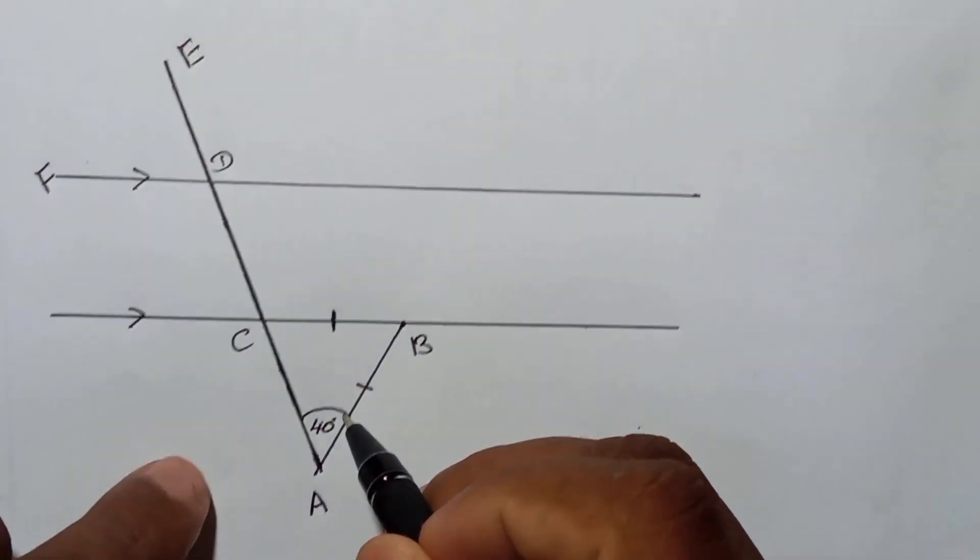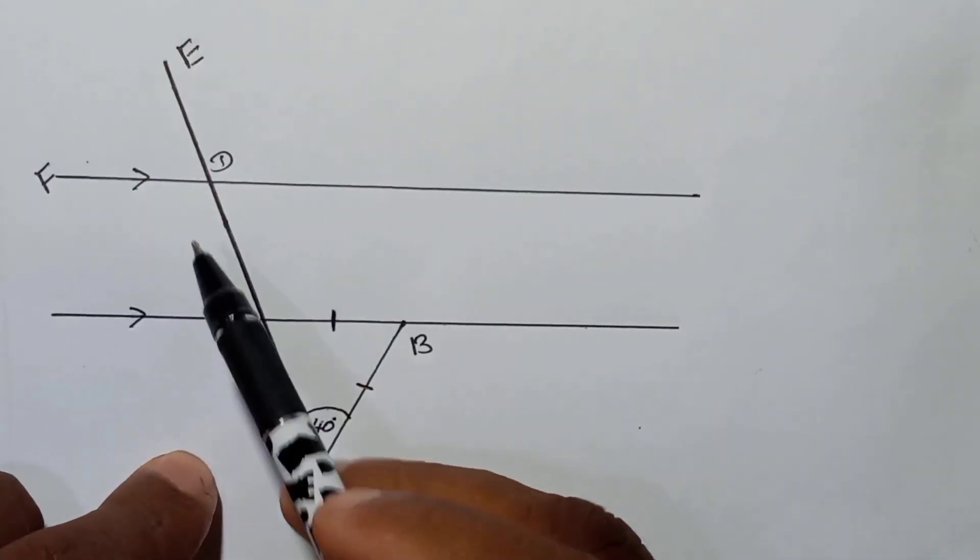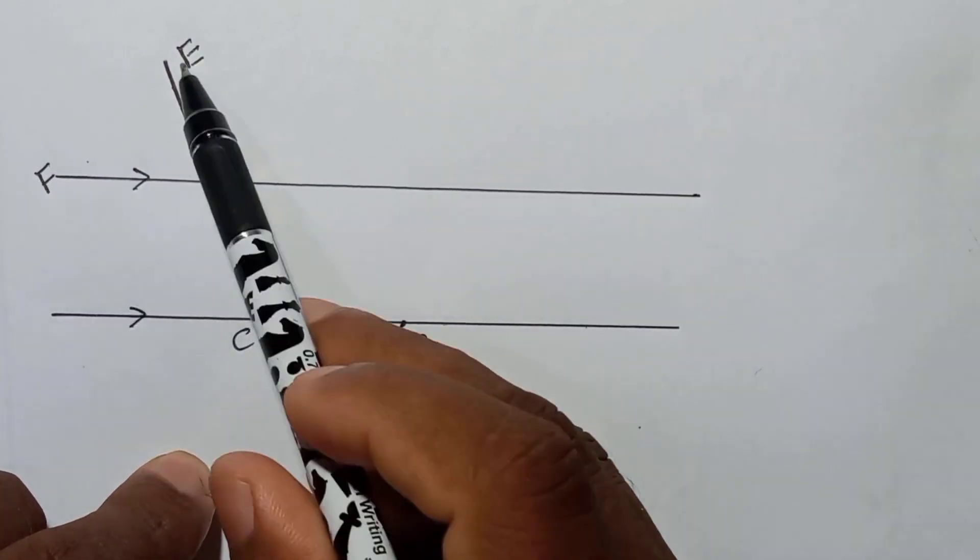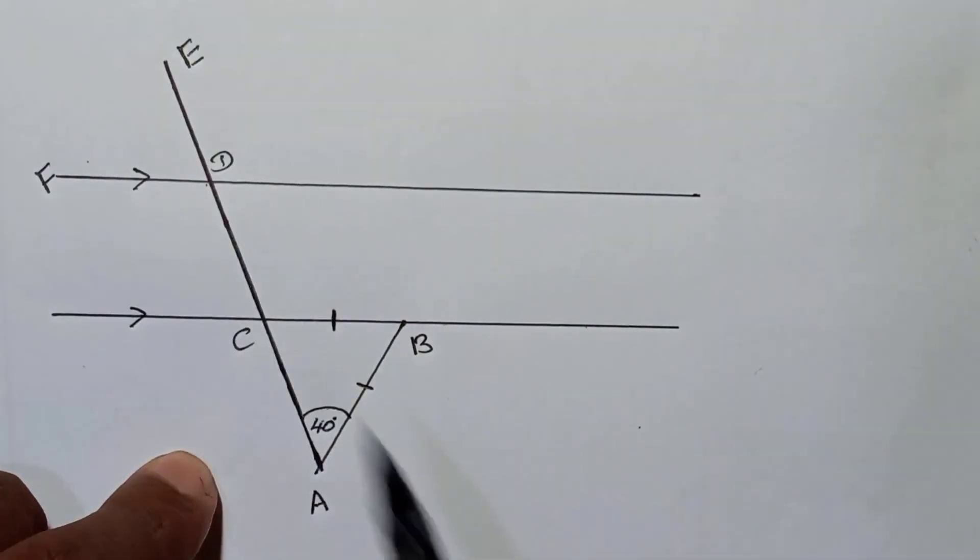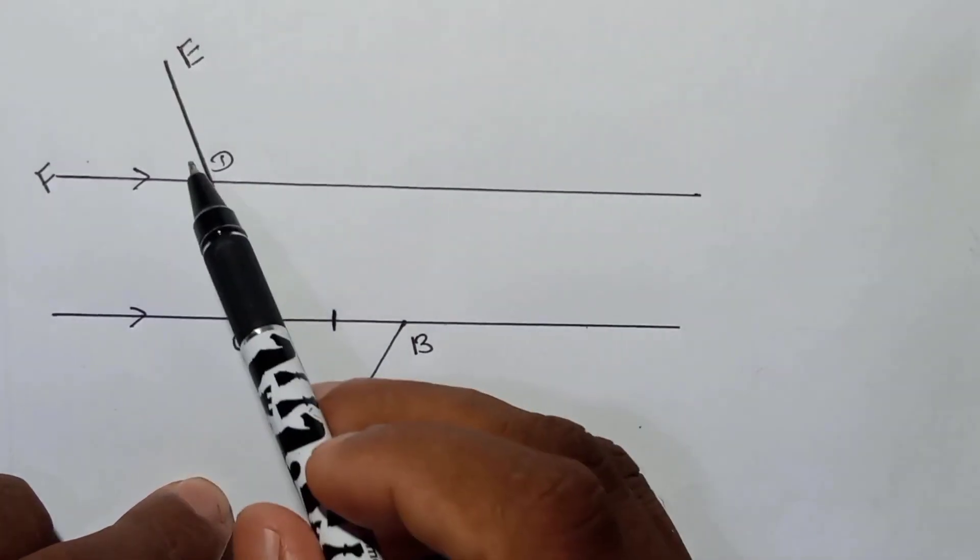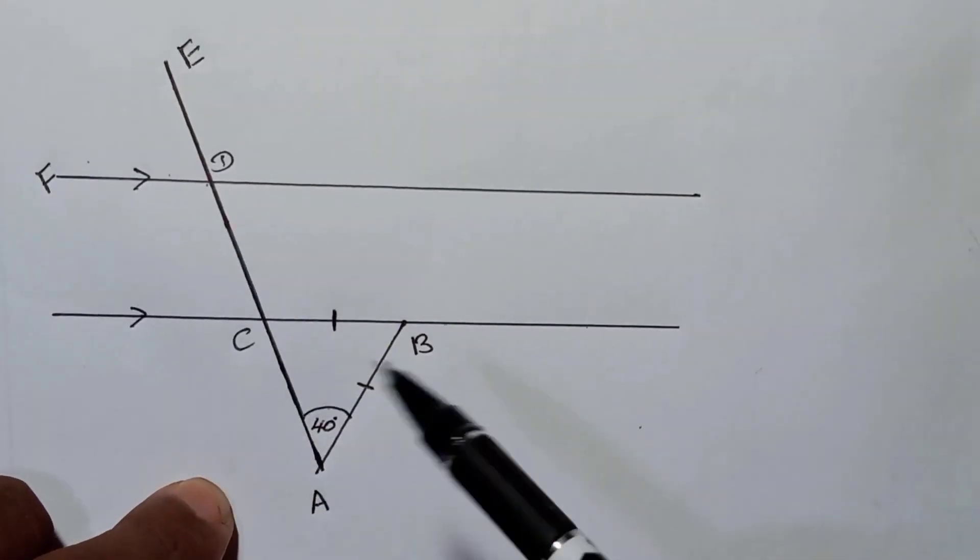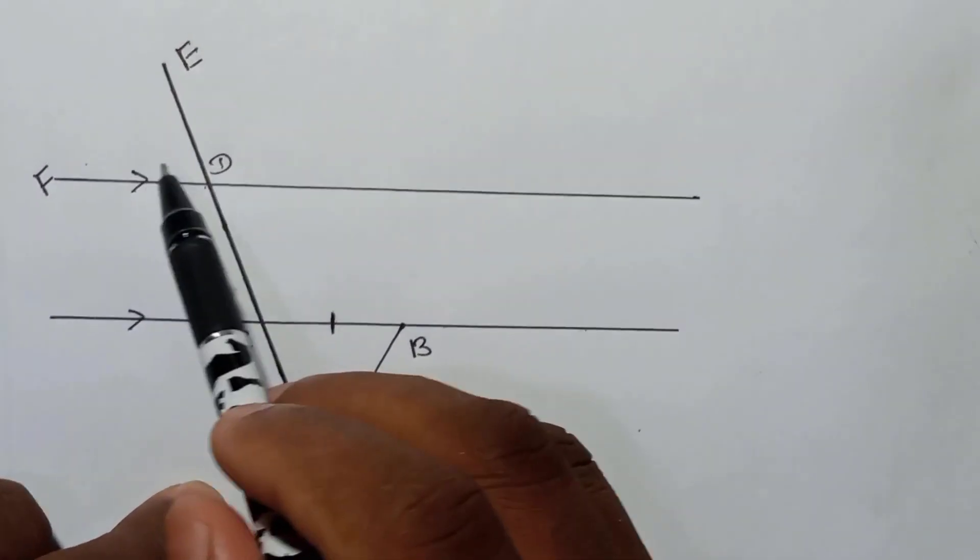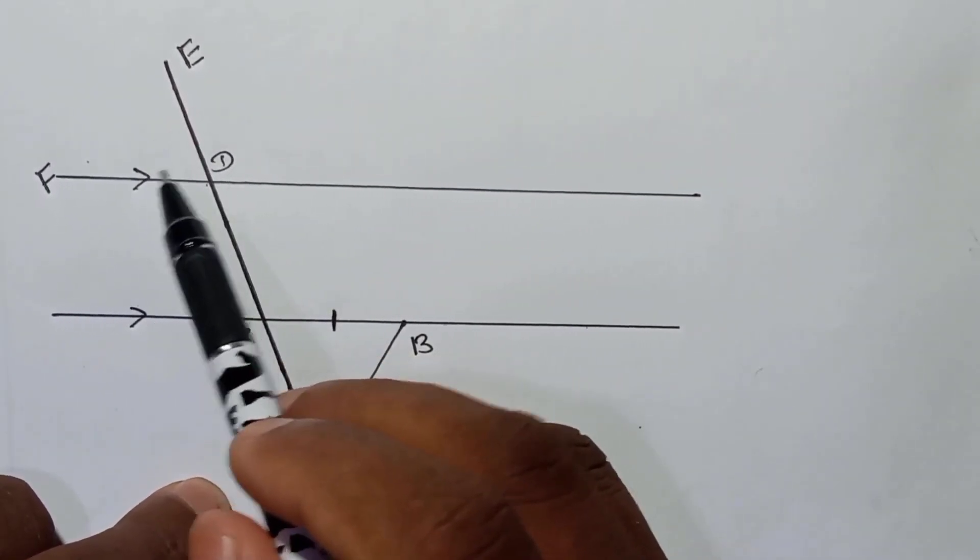Okay, now they asked to find the angle FDE, this angle. Like I told you earlier, don't try to find directly this angle. You need to find other angles and then you will find a method to get this angle.